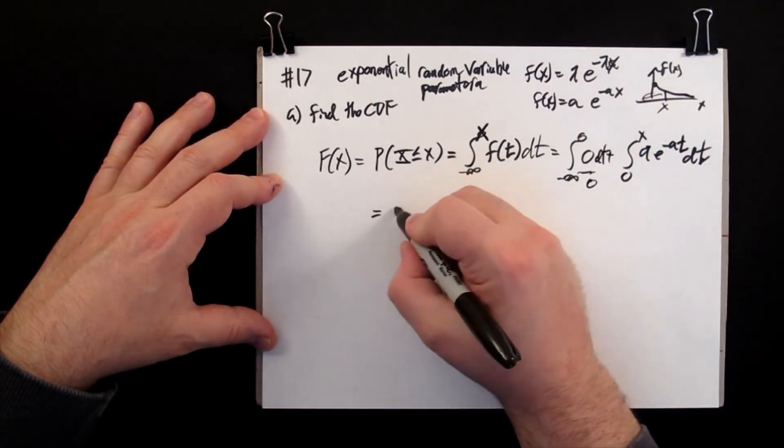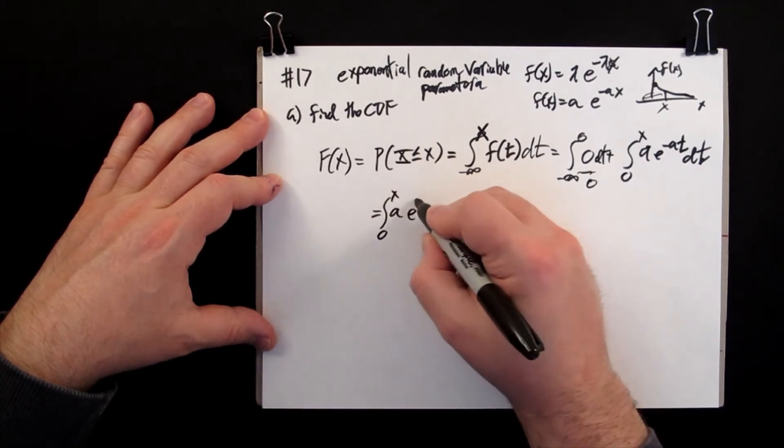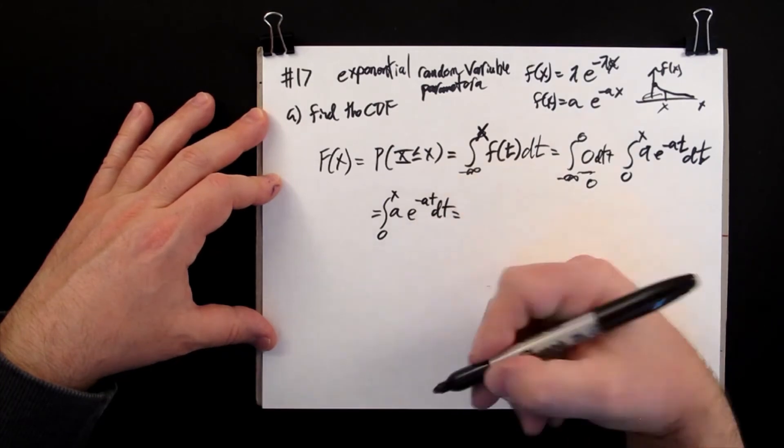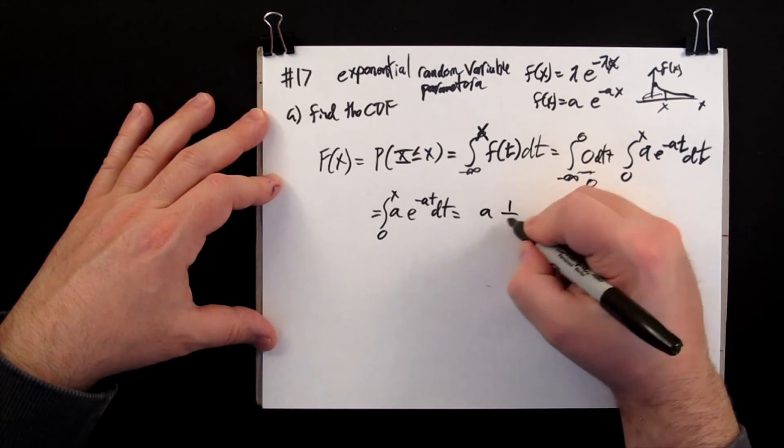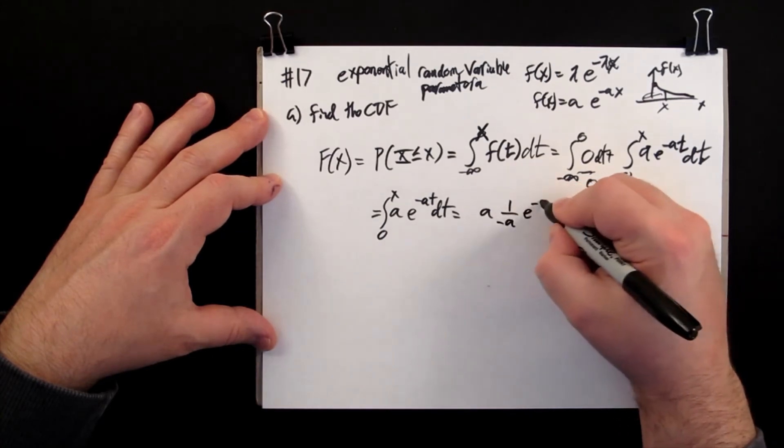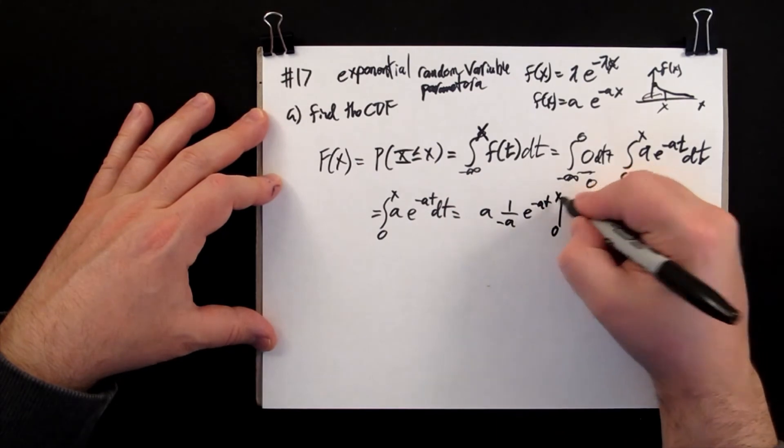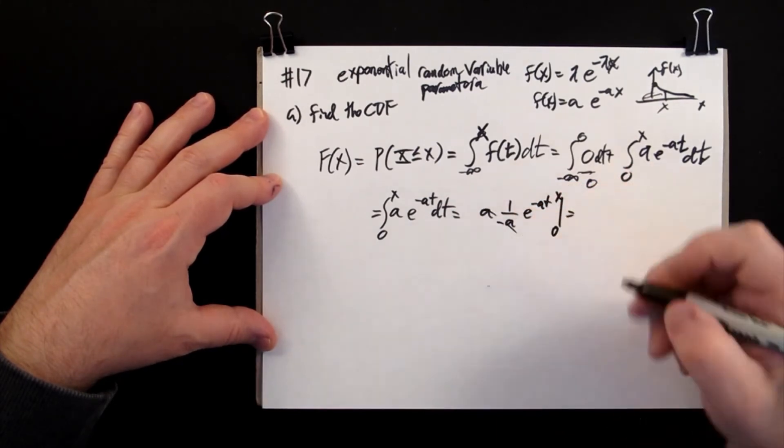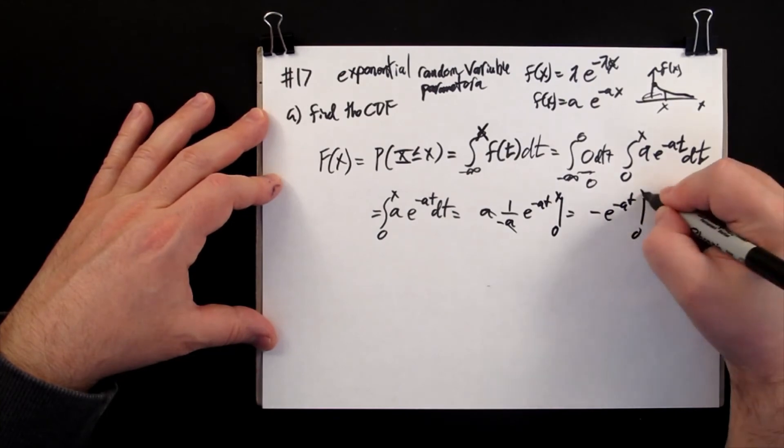Zero to x, a e to the minus a t dt. Find the antiderivative for this function. That is one over minus a times e to the minus a t, and we have to evaluate at the bounds zero and x. Cancel, so we have minus e to the minus a t evaluated at zero and x.